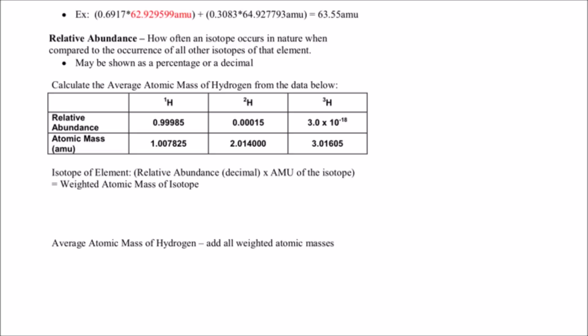The relative abundance may be shown as a percentage or a decimal. When doing your math, you must use decimal form — so if given 69.17%, divide by 100 to convert it to a decimal. Always use the decimal form and not the percentage when calculating.